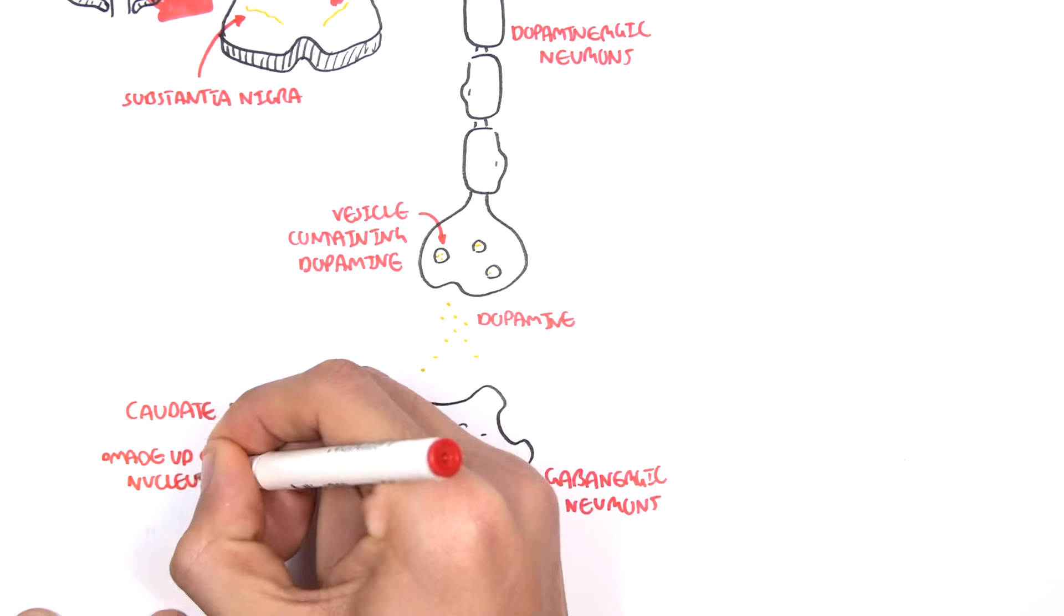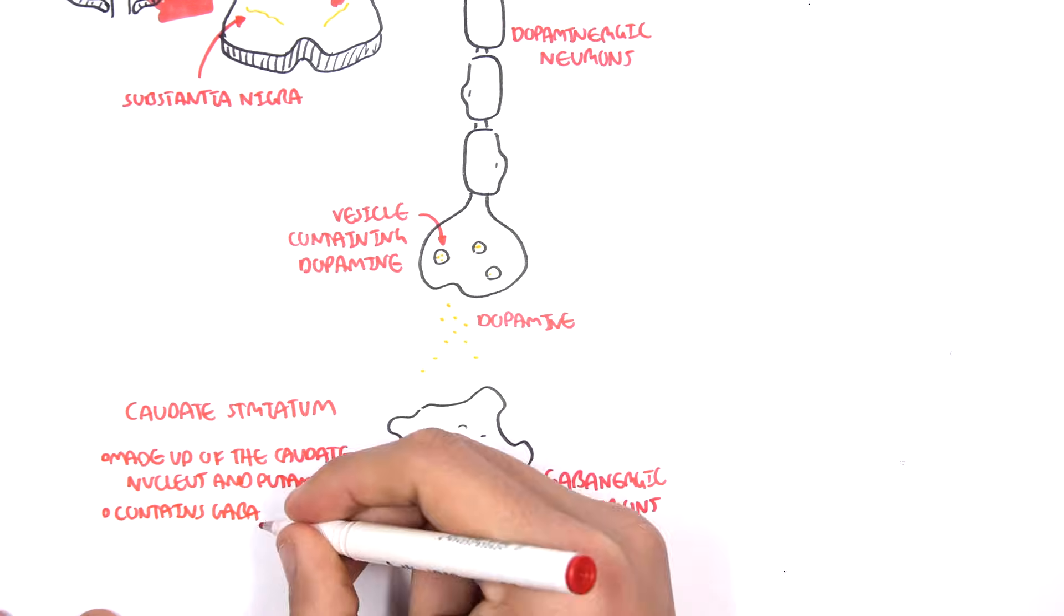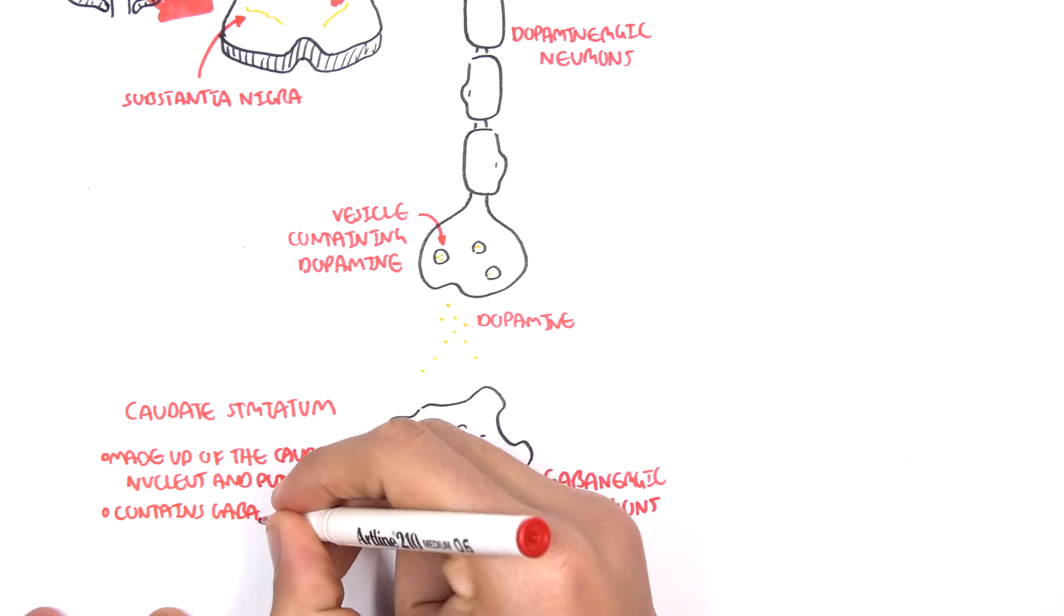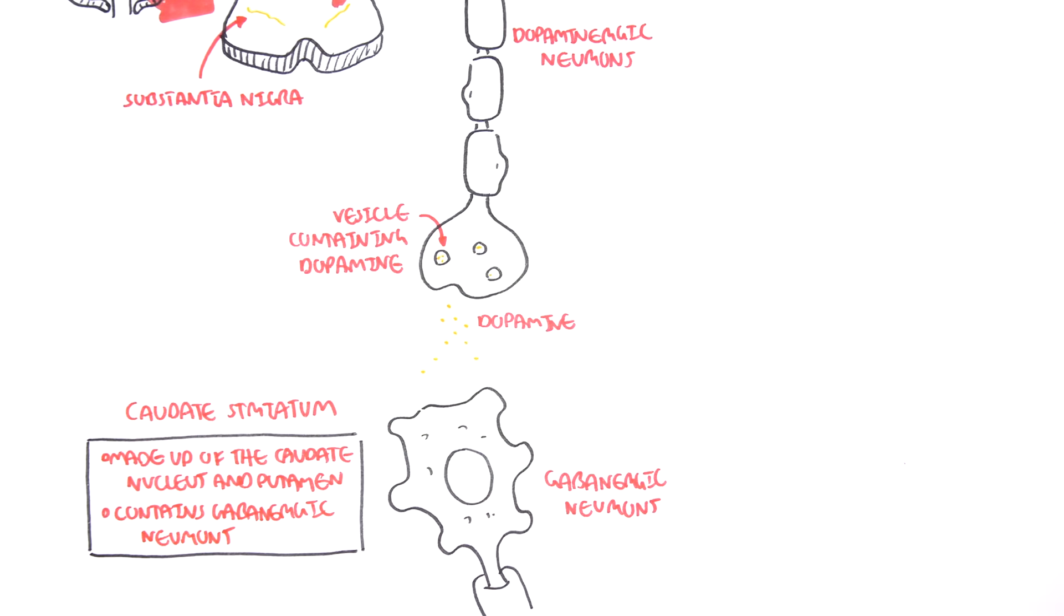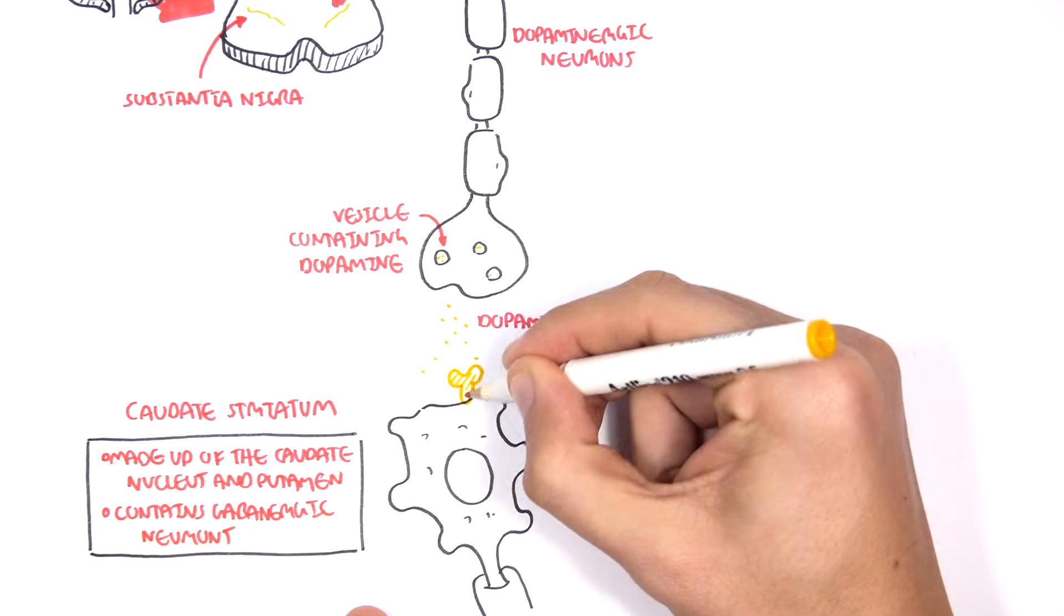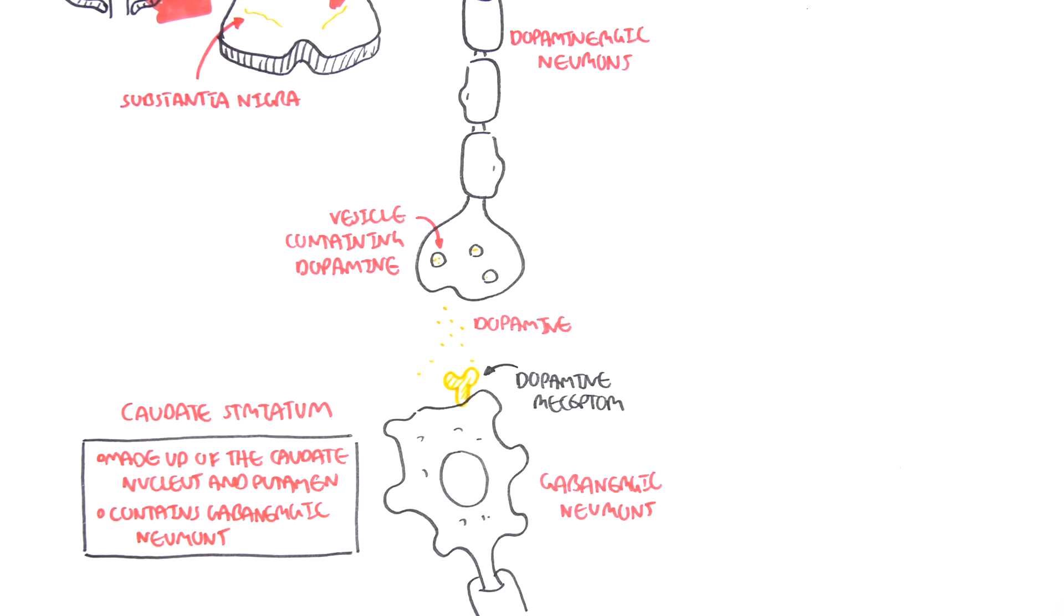These gabanergic neurons are found in an area of the brain known as the caudate striatum. The caudate striatum is made up of the caudate nucleus and caudate putamen. This area contains gabanergic neurons which receive information from the dopaminergic neurons from the substantia nigra. So these guys have dopamine receptors.